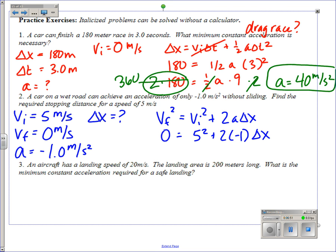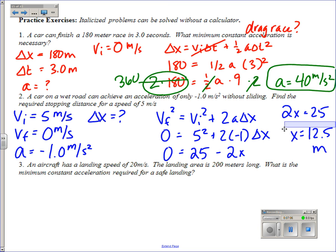Good practice: we've got zero equals 25 minus 2x. I would add 2x to both sides, 2x equals 25, so x equals 12.5 meters. It's actually delta x, isn't it.